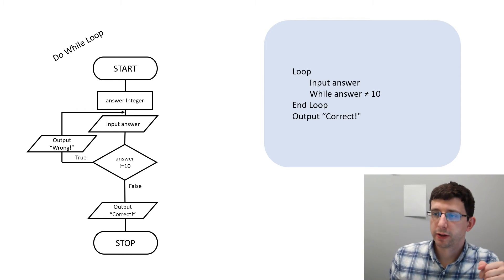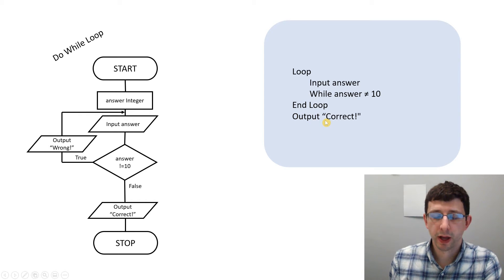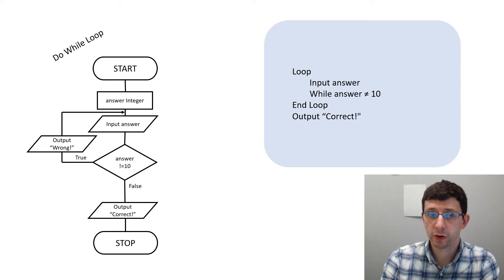Here's the do-while pseudocode: we input the answer inside a loop, and at the end we say 'while answer is not equal to 10' to loop around. When it equals 10 we finish the loop and output 'correct'. Let's go and have a look at how we use a while loop in Flowgorithm, then remake it as a do-while loop and see the output Python code for both.